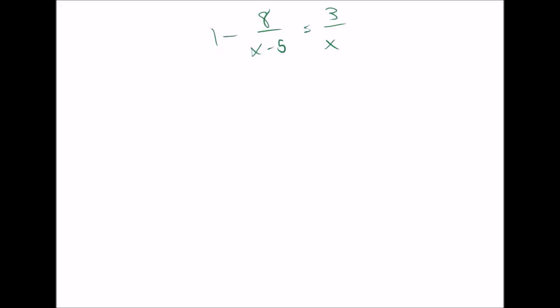Instead, what you have to do is multiply each term by the lowest common denominator like we learned how to find in 8.5. So what we're going to do is look at these three functions and say, what does each one need? This one doesn't have a denominator, the 1. The 8 has a denominator of x minus 5. And the 3 has a denominator of x.